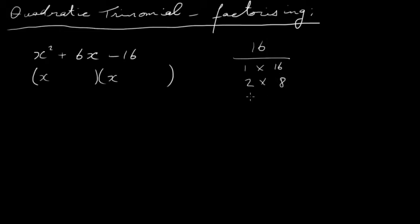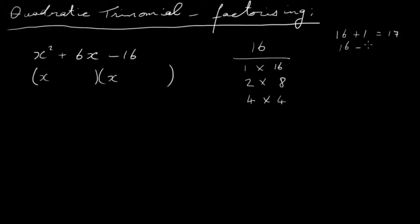Then take the 16 and find all the different factors of 16: 1 times 16, 2 times 8, and 4 times 4. We want a pair of numbers that will also give us 6 when we add or subtract them. Can we make a 6 from 1 and 16? No — 16 plus 1 is 17, 16 minus 1 is 15, so that doesn't work.